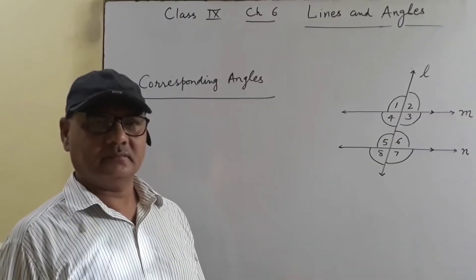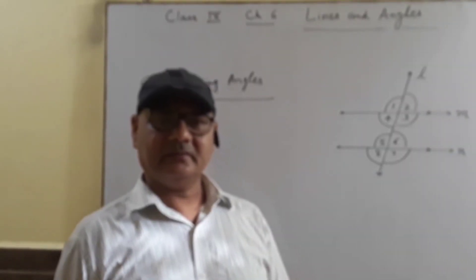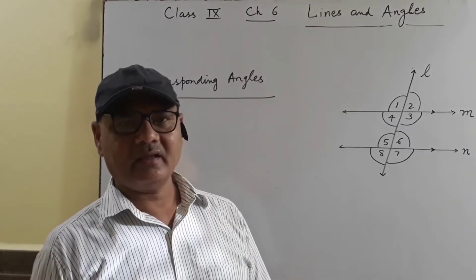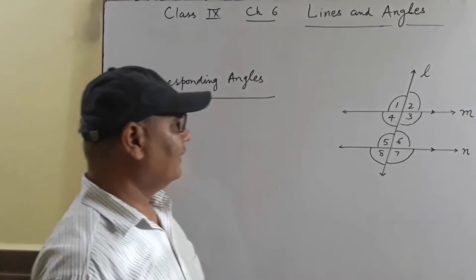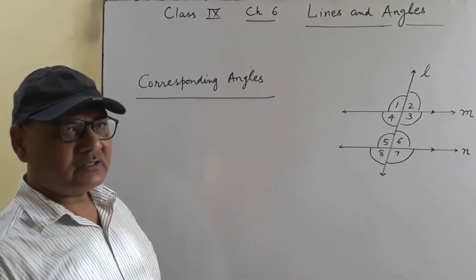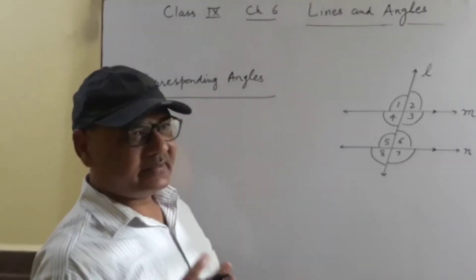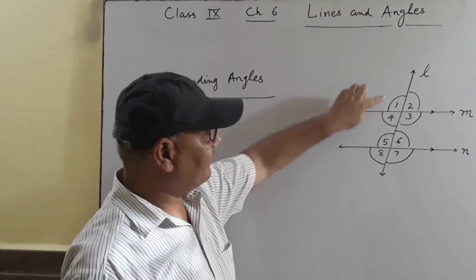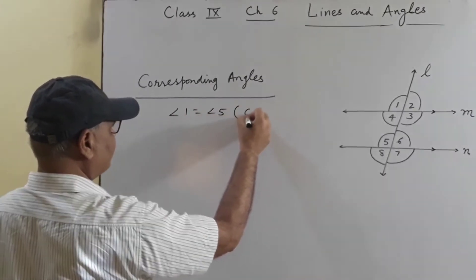If lines are parallel, then corresponding angles are equal, and if corresponding angles are equal, then lines are parallel. For example, if lines are parallel, then angle 1 is equal to angle 5, and the reason is corresponding angles.